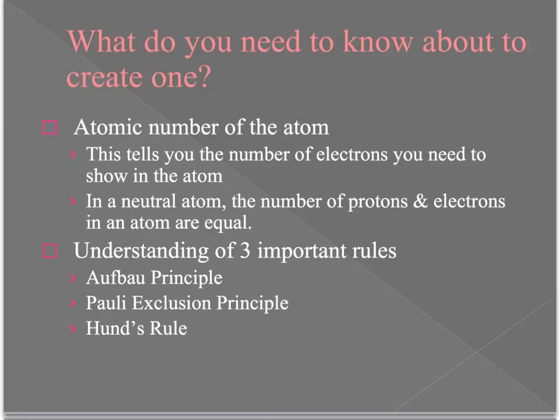To create an orbital filling diagram there are a few things we need to understand. First, you need to know how many electrons you have to represent. The atomic number of the atom will tell you that if it's a neutral atom. If atoms aren't neutral, it means they have either gained or lost electrons, so they have extra or fewer than they normally would.